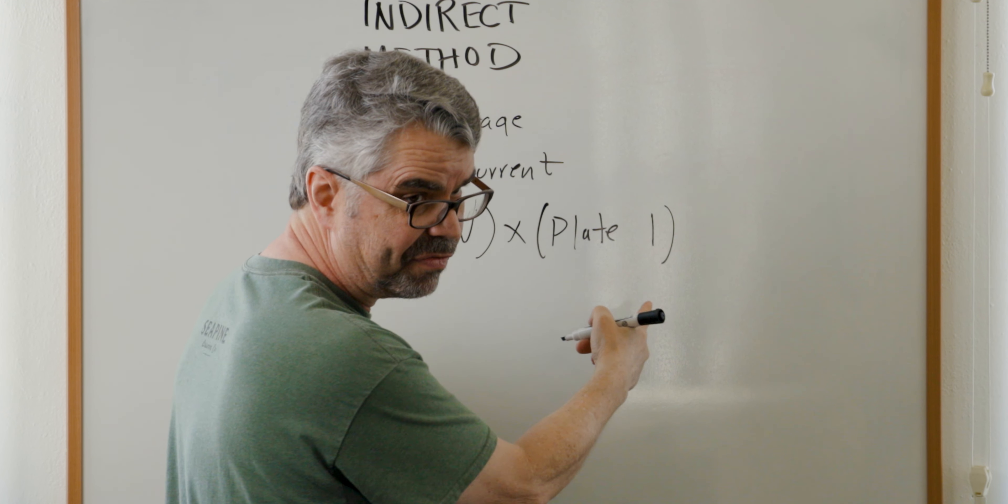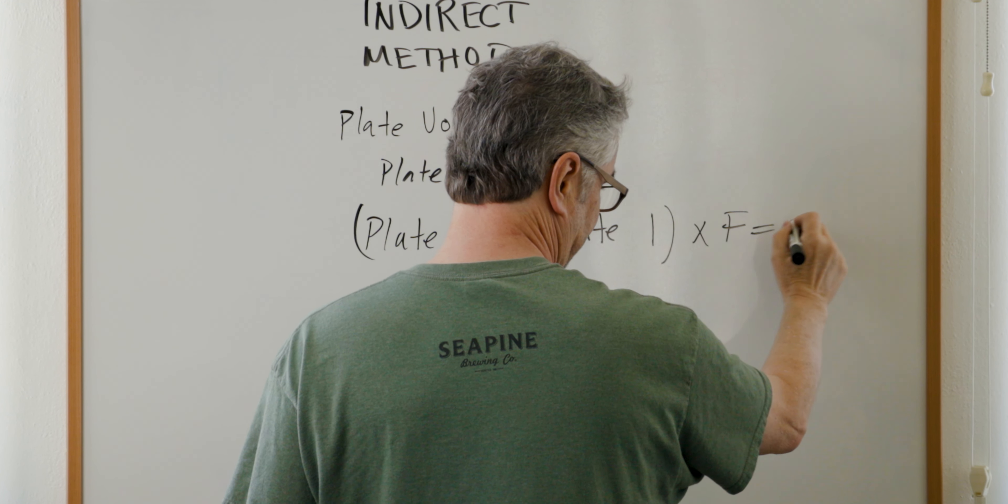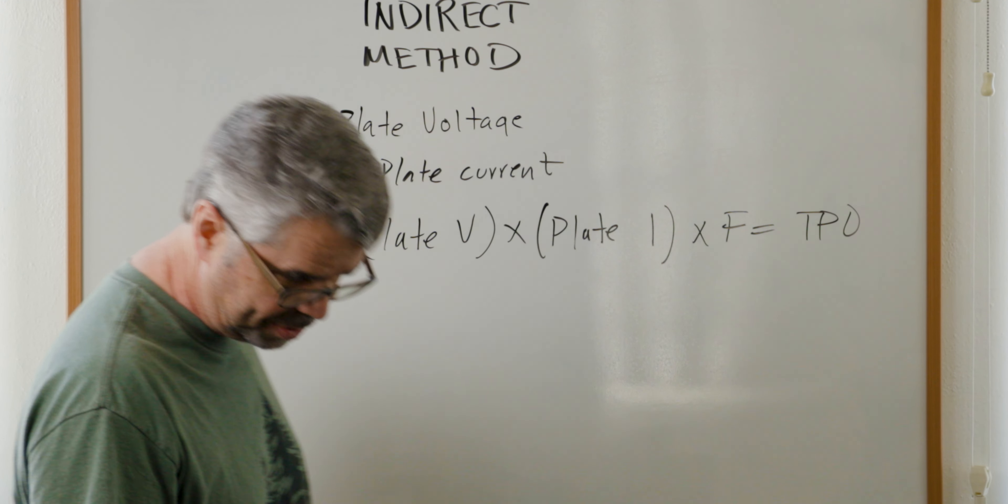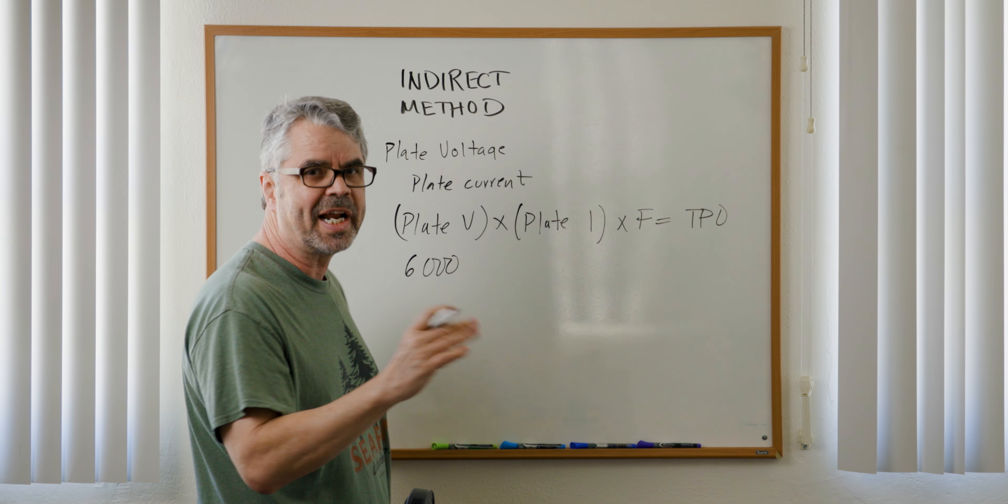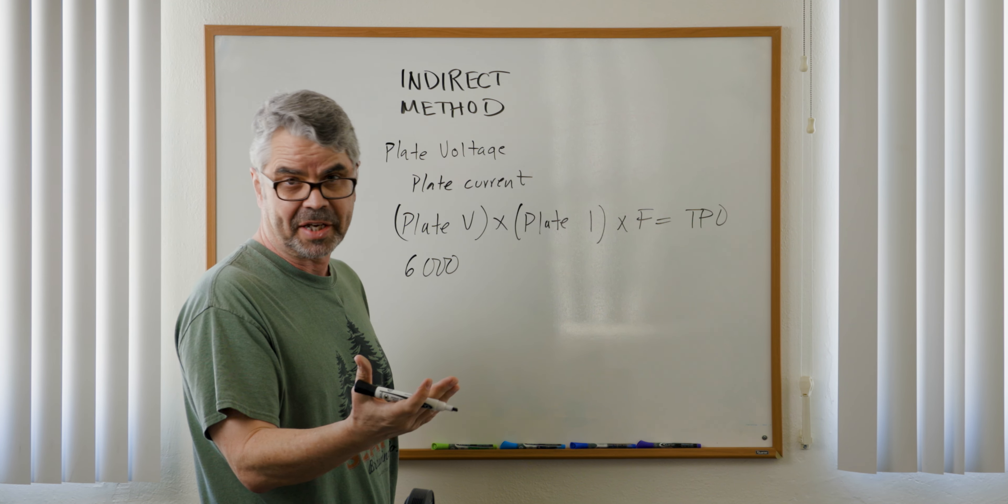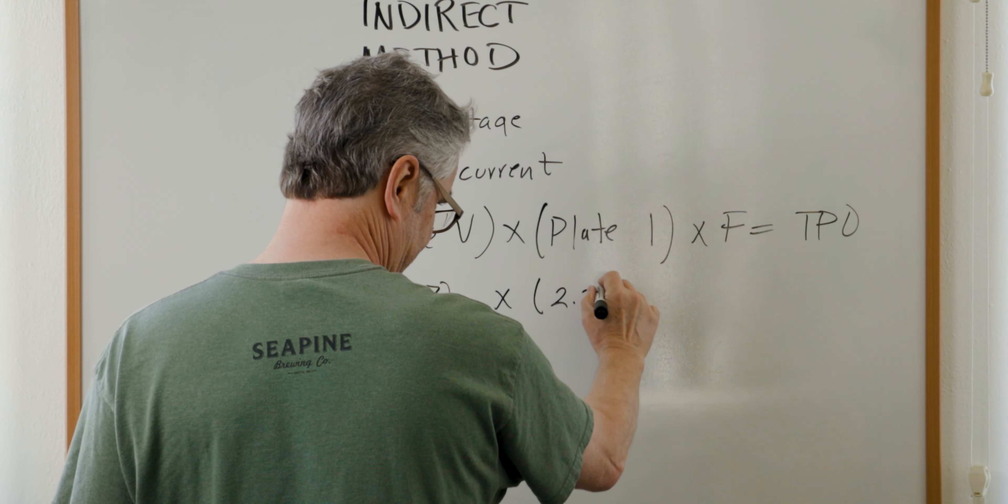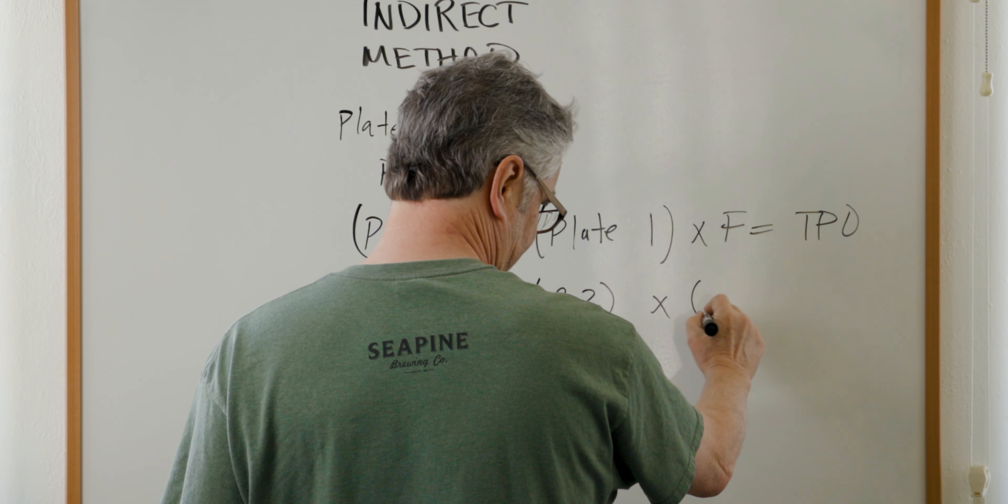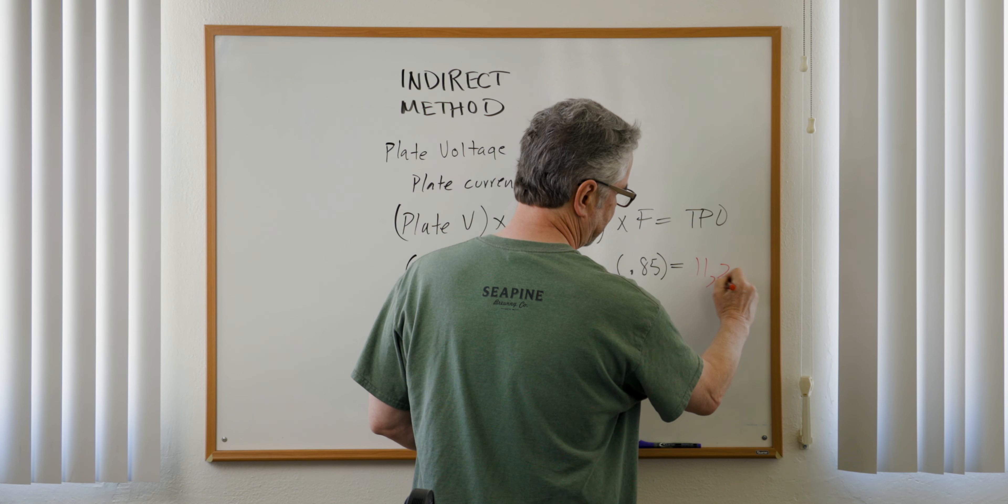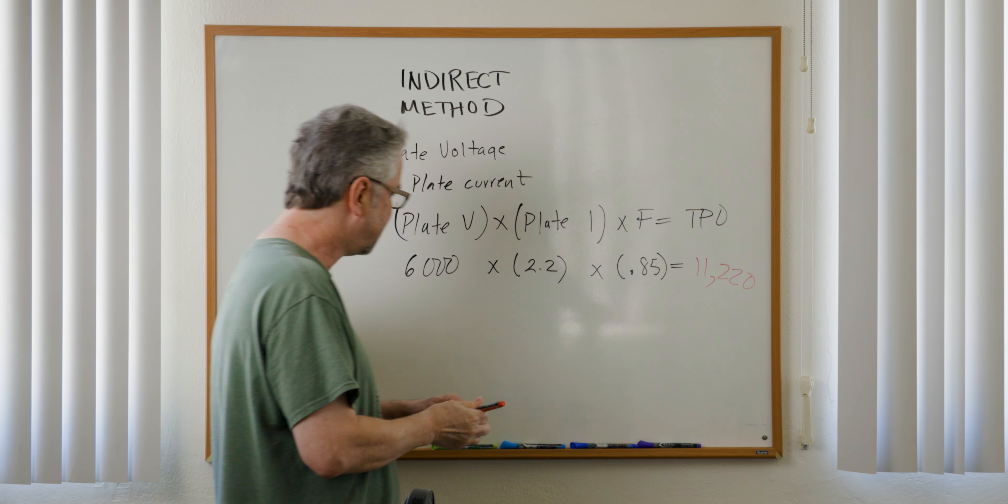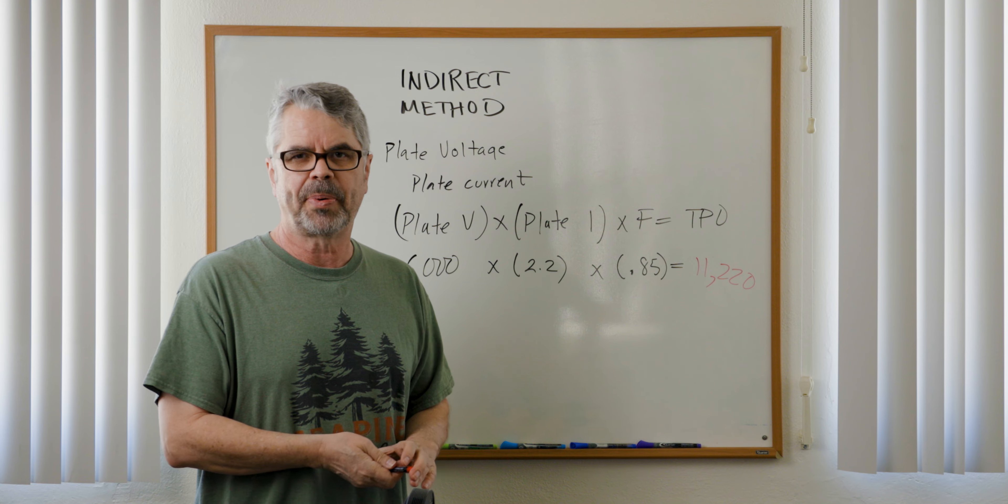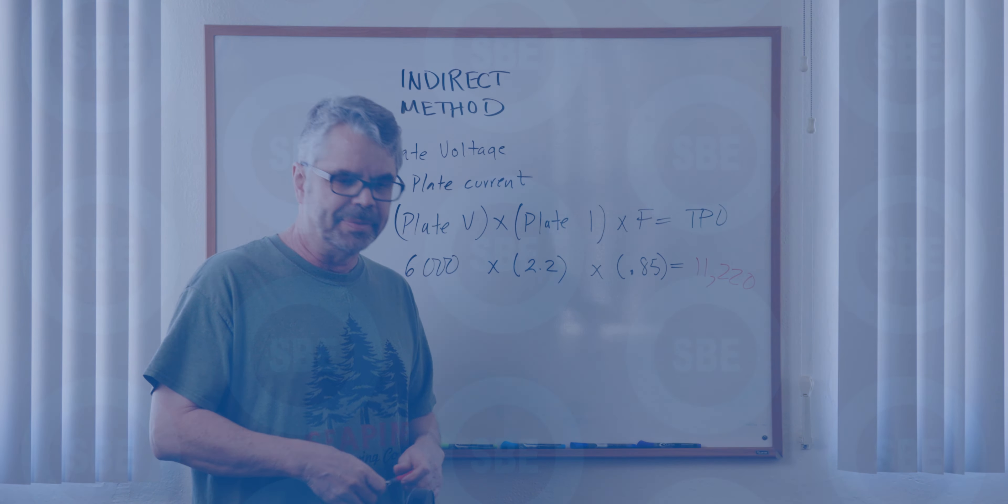I'm going to use the initial I for that, times efficiency, equals the transmitter power output. So as an example, say 6,000 - and these are just random figures I'm pulling out, it could be way different than this, but the math is exactly the same - times 2.2 times 0.85. So that's all there is: plate voltage times plate current times efficiency is the transmitter power output. That's called the indirect method.